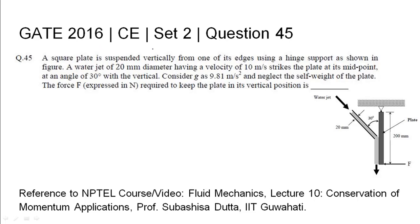GATE 2016 civil engineering set 2 question 45. A square plate is suspended vertically from one of its edges using a hinge support as shown in the figure. A water jet of 20 mm diameter having a velocity of 10 meters per second strikes the plate.